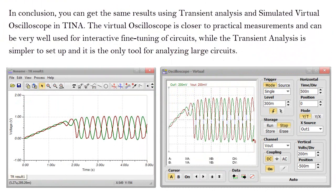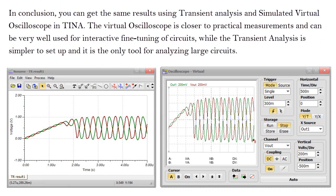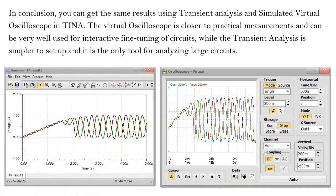In conclusion, you can get the same results using transient analysis and simulated virtual oscilloscope in TINA. The virtual oscilloscope is closer to practical measurements and can be very well used for interactive fine-tuning of circuits, while the transient analysis is simpler to set up, and it is the only tool for analyzing large circuits.